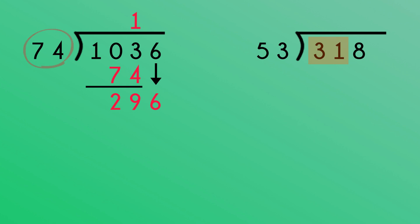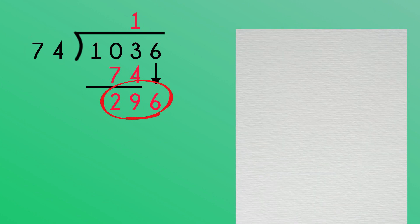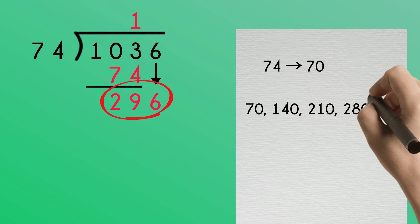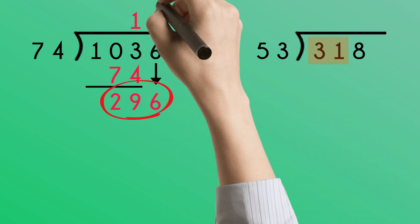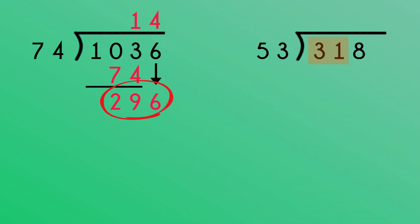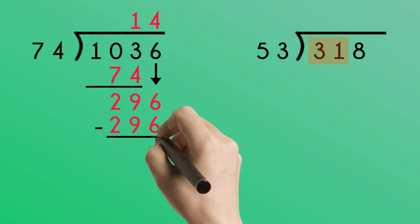How many 74s in 296? This is a bit tricky, but if I round 74 to 70, it helps. 74 fits into 296 four times. When we multiply and then subtract, we can see that there are no remainders. 1,036 divided by 74 is 14.